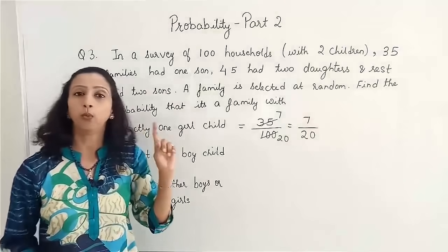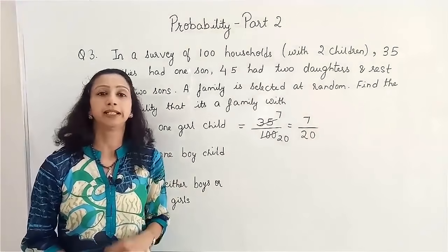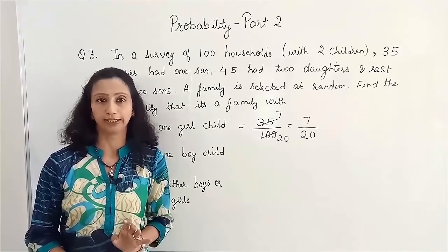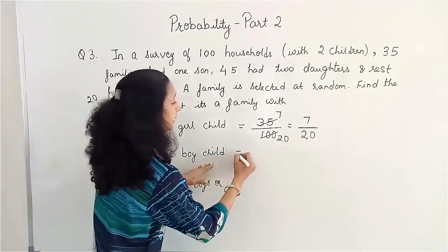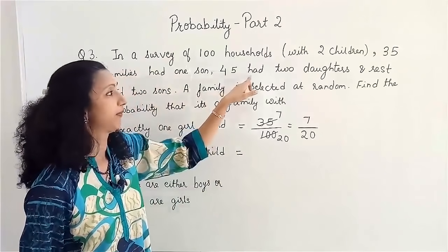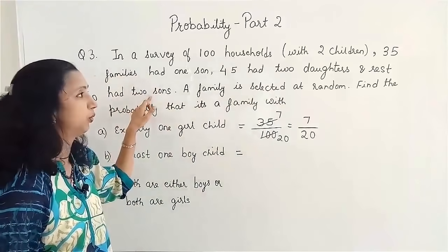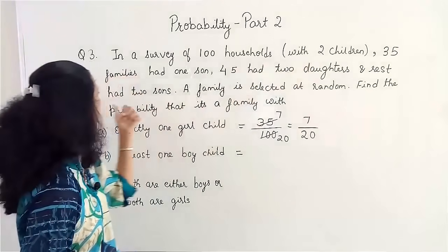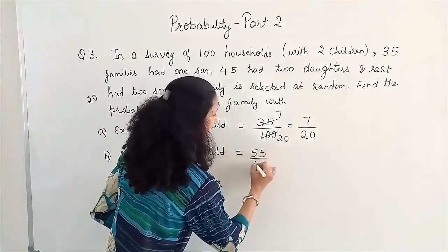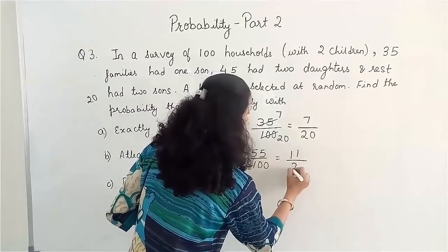Next: at least 1 boy child, meaning either 1 boy or 2 boys in the family. The 45 families with 2 daughters have no boy child, so they are excluded. The 35 families with 1 son and the 20 families with 2 sons both qualify. Adding 35 and 20 gives 55, so the probability is 55 by 100, which reduces to 11 by 20.